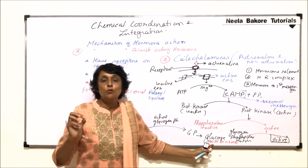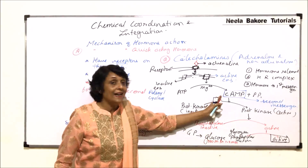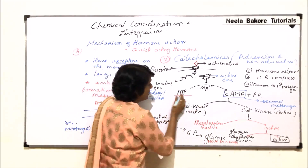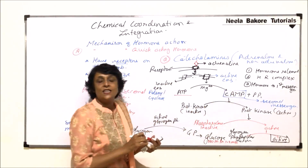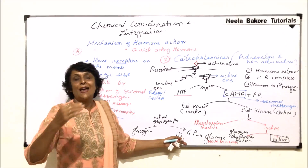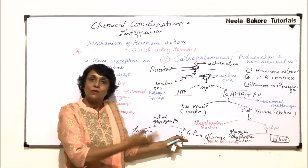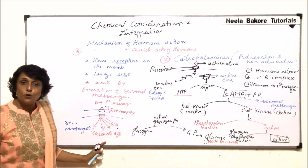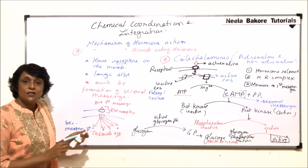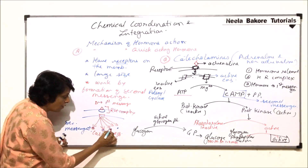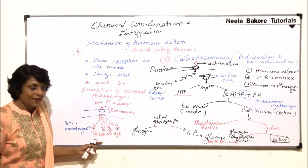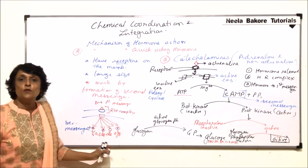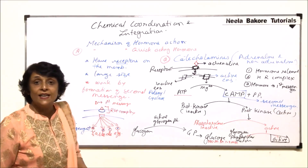In just 1-2 minutes, millions of glucose molecules are released — and that is with just one cyclic AMP. If 10 ATPs are broken down into 10 cyclic AMPs, this reaction gets amplified 10, 100, or 1000 times. That is why we call it a cascade effect. Each cyclic AMP shows its effect, and millions of glucose molecules are released in the blood to fulfill the requirement of the stress situation.